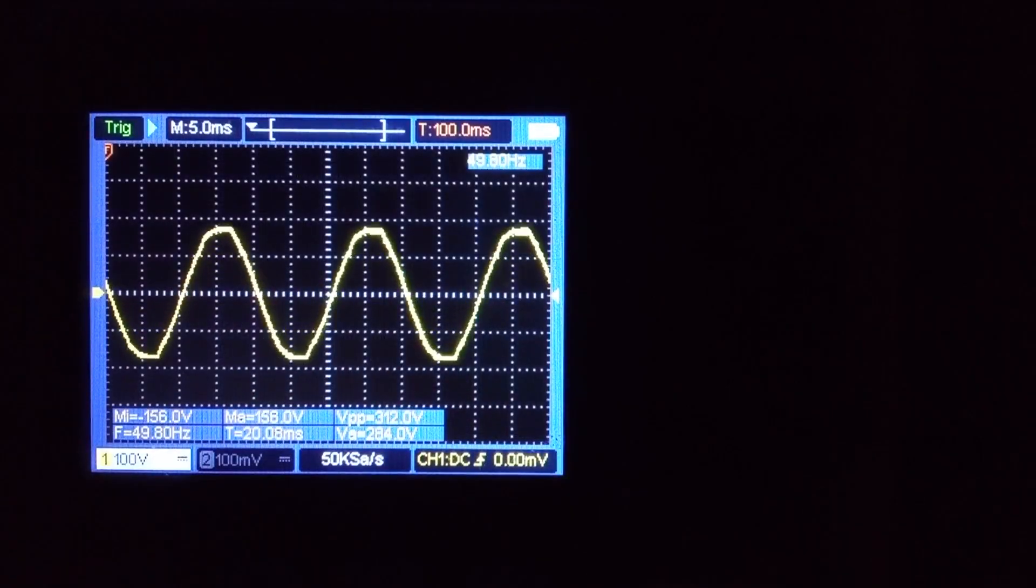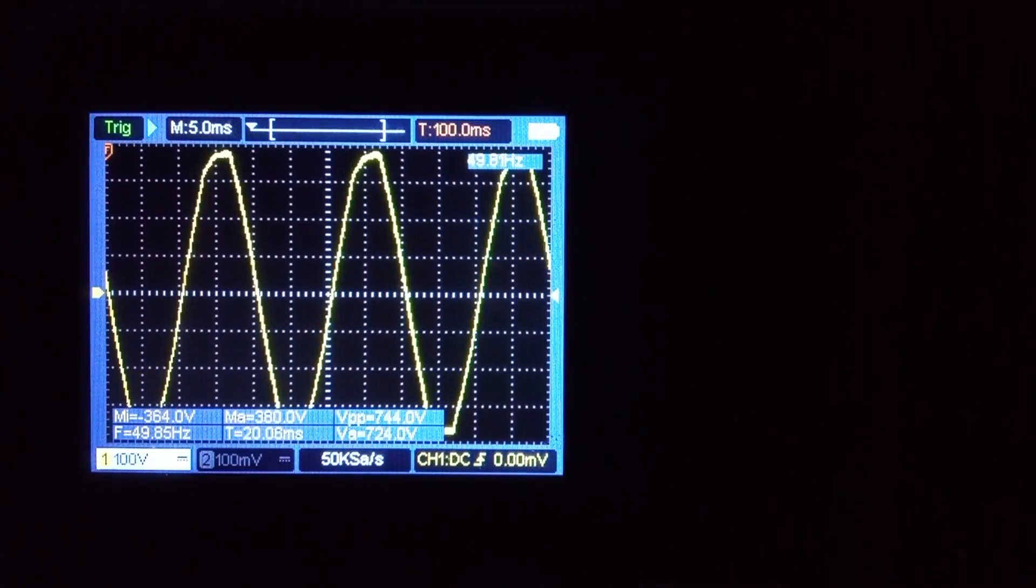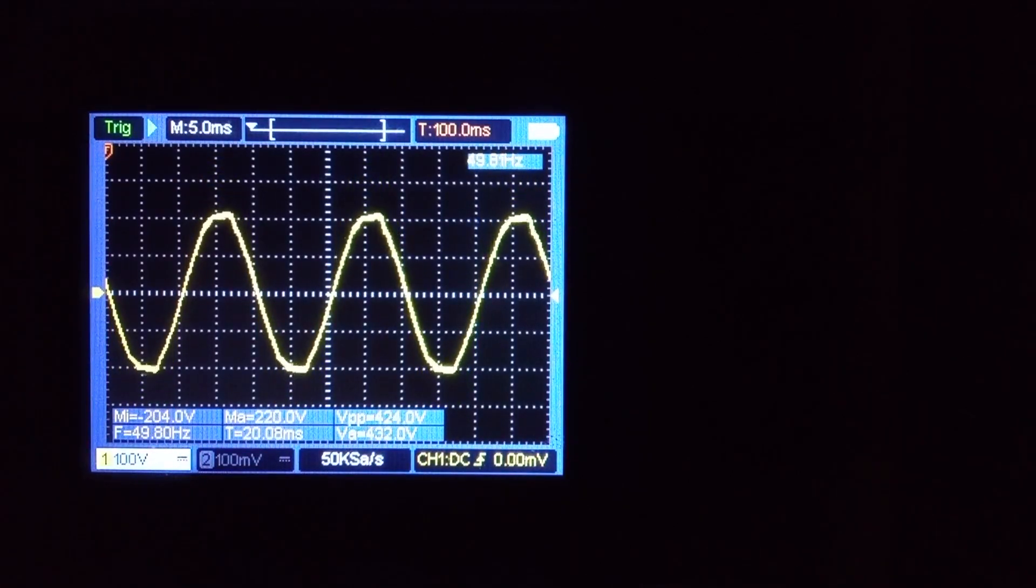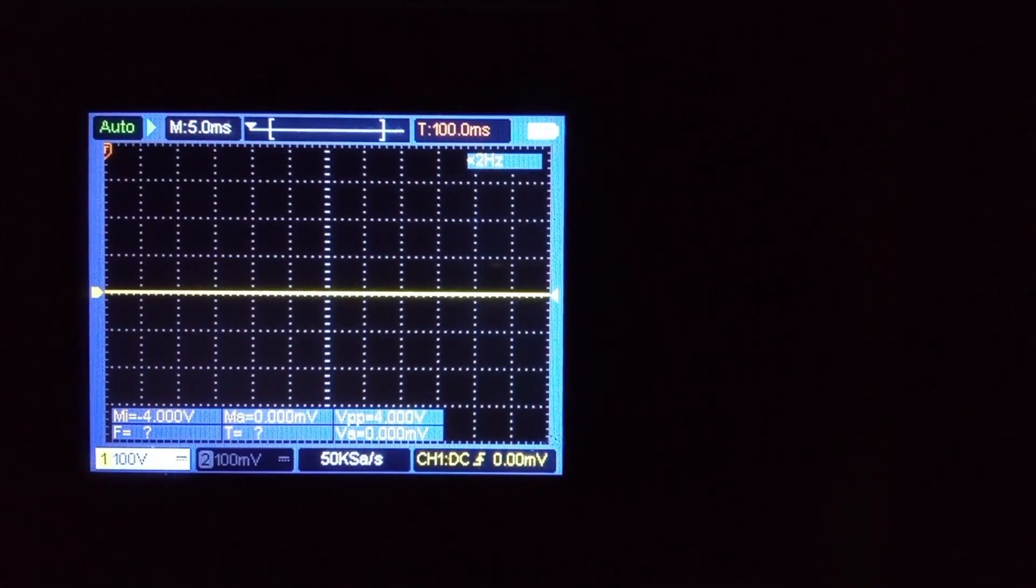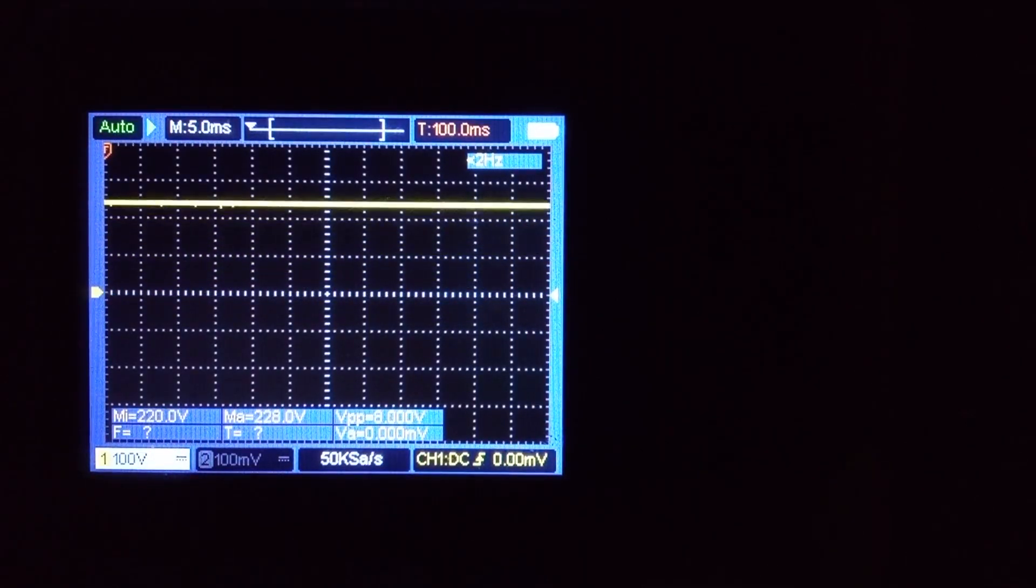In an AC circuit, the voltage crosses zero point many times a second. Every time it does, it offers a natural point for the arc to extinguish. But in DC there's no such break, so the arc can persist.